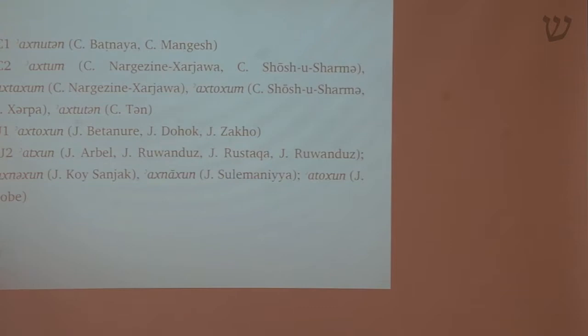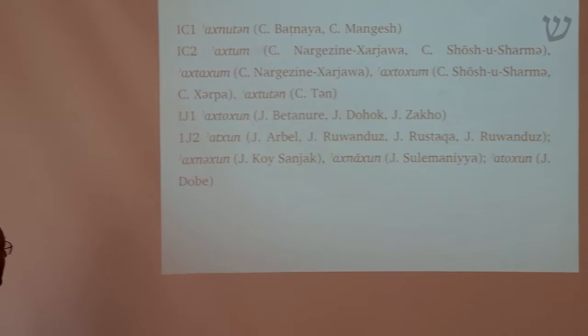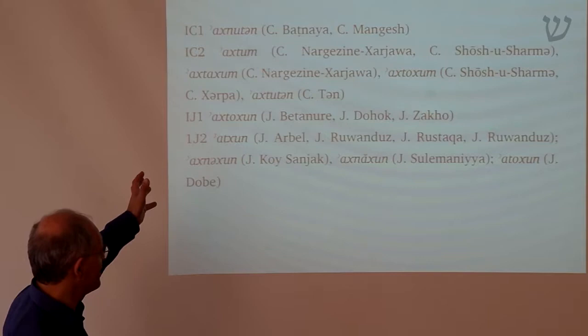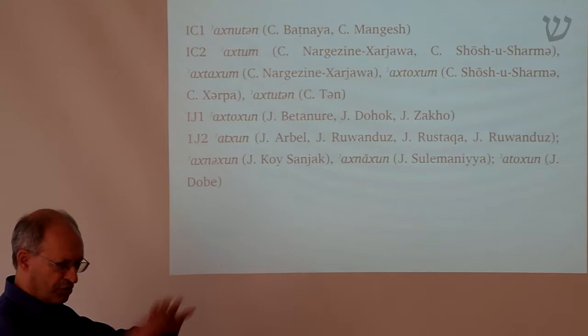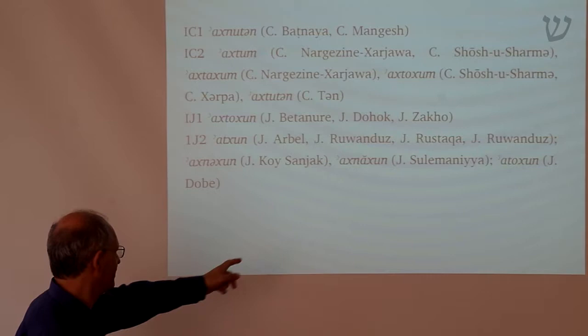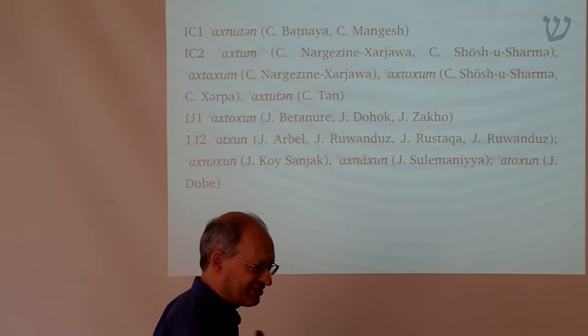Here are some examples of the second person plural suffix across dialects. Really this is just to give you an example of the diversity of the dialects. These are all different forms of the second person plural — 'you plural': 'achnutun', 'achtum', 'achtachum', 'achtochum', 'achtochum', 'achnechun', 'achtochun'. Just imagine 150 dialects, and virtually everyone has a slightly different form of the pronoun.